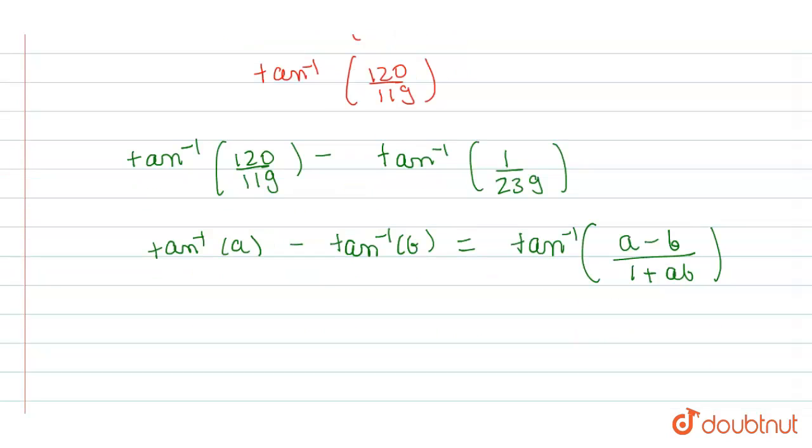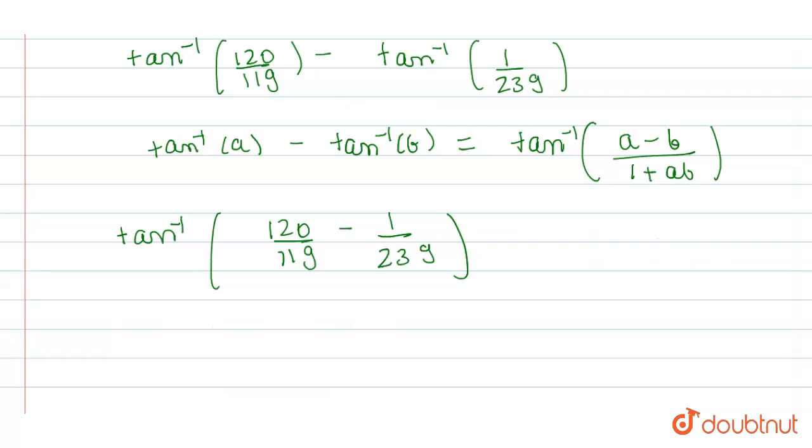From here, we are getting value as tan inverse of 120 by 119 minus 1 by 239 divided by 1 plus 120 by 119 into 1 by 239.